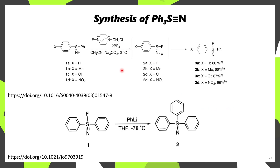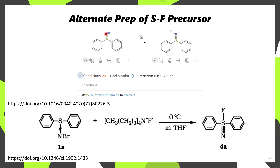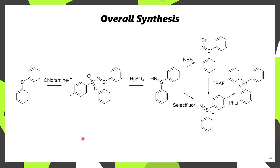However, if you don't want to use Selectfluor, you can instead brominate that NH using N-bromosuccinimide, and then through the use of TBAF (tetrabutylammonium fluoride), it's possible to form the S–F reagent this way. One of these applications may be more suitable to your needs depending on what you have in-house or what you want to scale. To provide an overview: you start with diphenyl thioether, convert it to S=N through chloramine T, deprotect with sulfuric acid, then either convert to the N–Br with NBS and substitute with TBAF to get the S–F, or directly convert the NH derivative to S–F using Selectfluor. Finally, this is substituted with phenyllithium to afford the desired S≡N reagent.